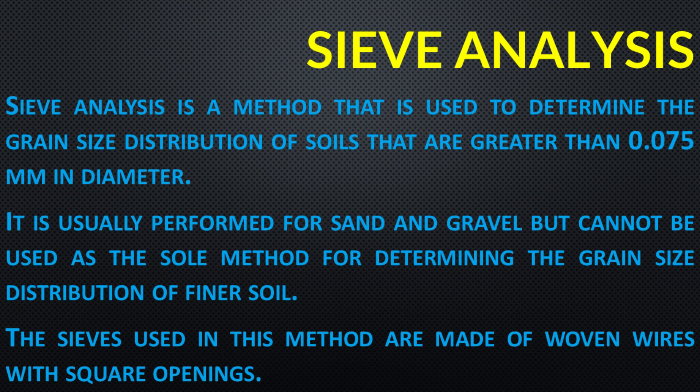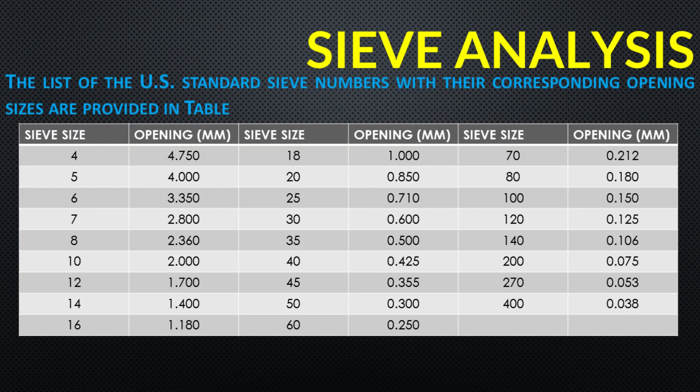Sieve analysis is a method used to determine the grain size distribution of soils that are greater than 0.075 mm in diameter. It is usually performed for sand and gravel, but cannot be used as the sole method for determining the grain size distribution of finer soil. The sieves used in this method are made of woven wires with square openings. The US standard sieve numbers with their corresponding opening sizes are provided in the table.